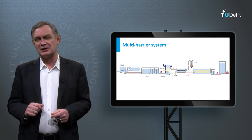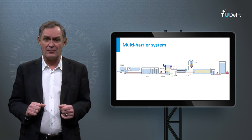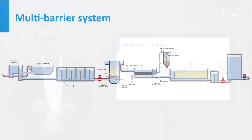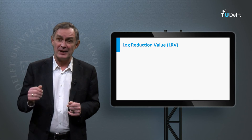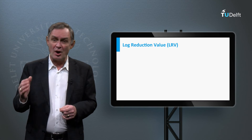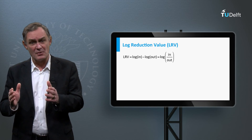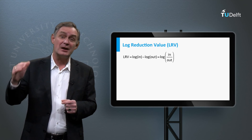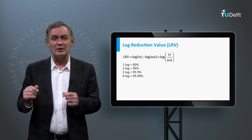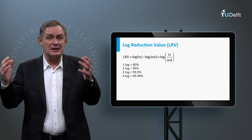To obtain sufficient disinfection in the Netherlands, several types of disinfection methods are placed in series to obtain a more reliable removal of microorganisms. This is what we call a multi-barrier system. In disinfection we generally use the log reduction value, also called the decimal elimination capacity, to express the efficiency of the multi-barrier system. The log reduction value is the logarithm of the incoming concentration minus the logarithm of the outgoing concentration, which is the same as the logarithm of the incoming concentration divided by the outgoing concentration.